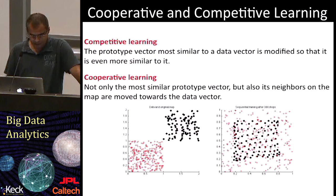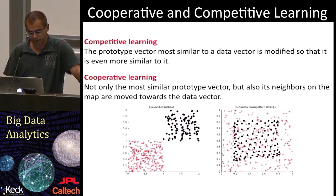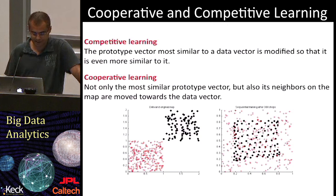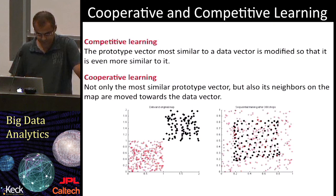With this model, clustering is performed by having several units competing for the current object. It employs both competitive and cooperative learning. It's competitive because the prototype vector most similar to the input vector — the best matching unit — is modified, and cooperative because not only the best matching unit is modified but also its topological neighbors. The first figure shows an example of how the map can learn the data. On the left is the initial configuration with the data vectors in red, completely separated from the map in the upper right corner. After a few iterations, on the right, you can see how the map starts covering the input space.